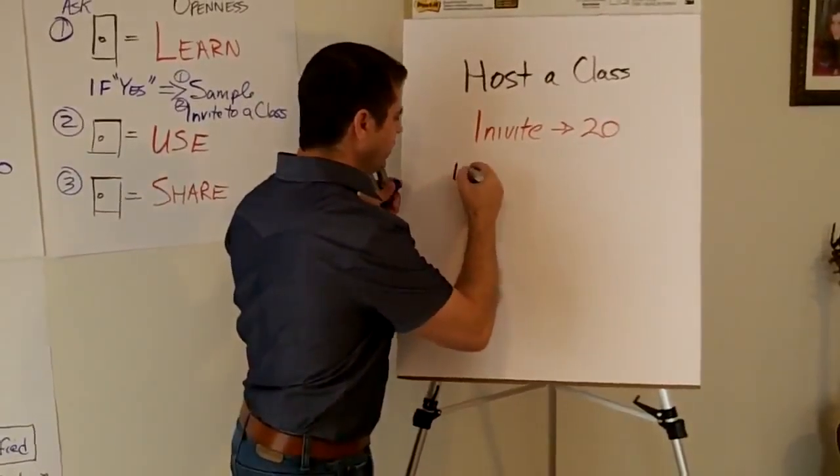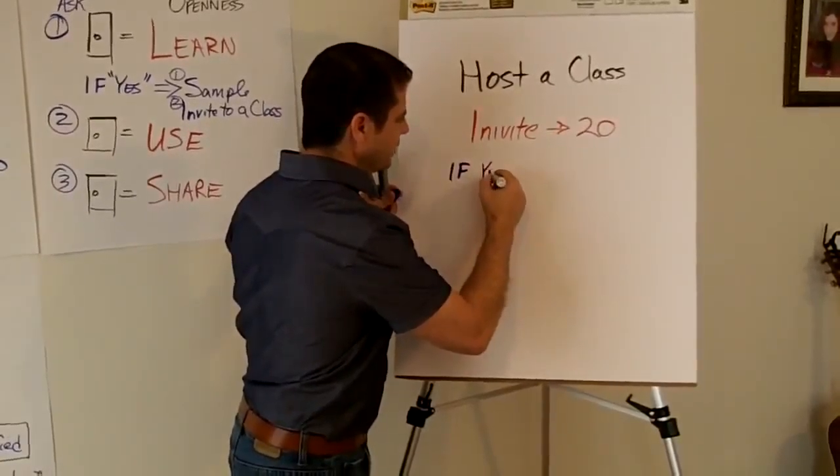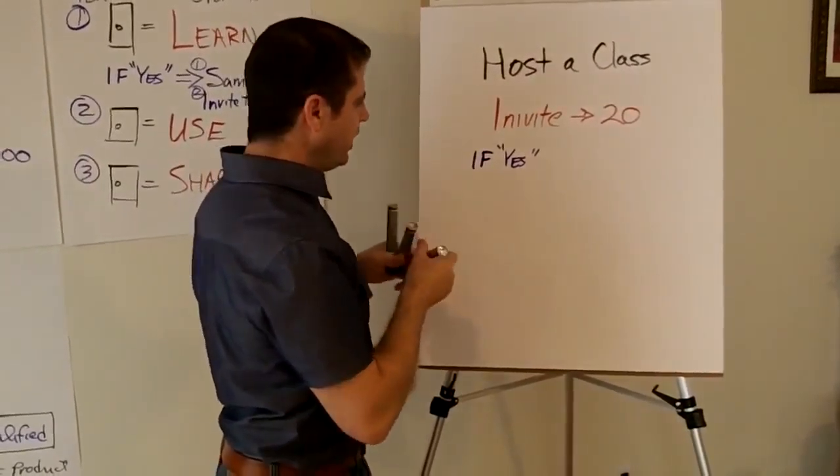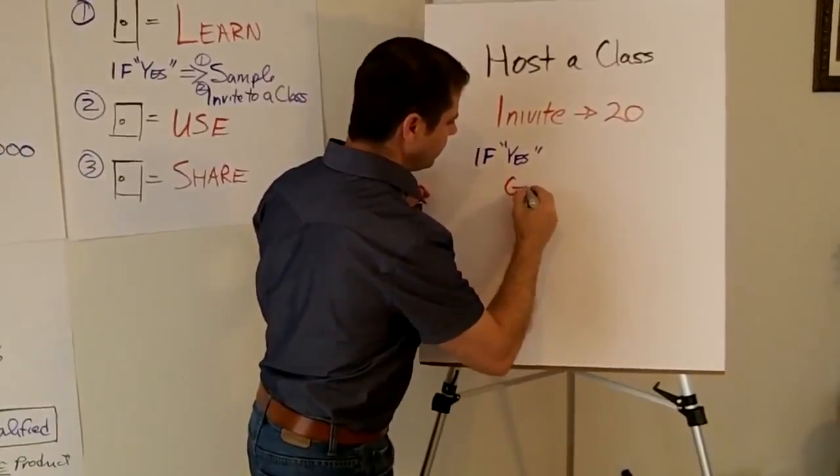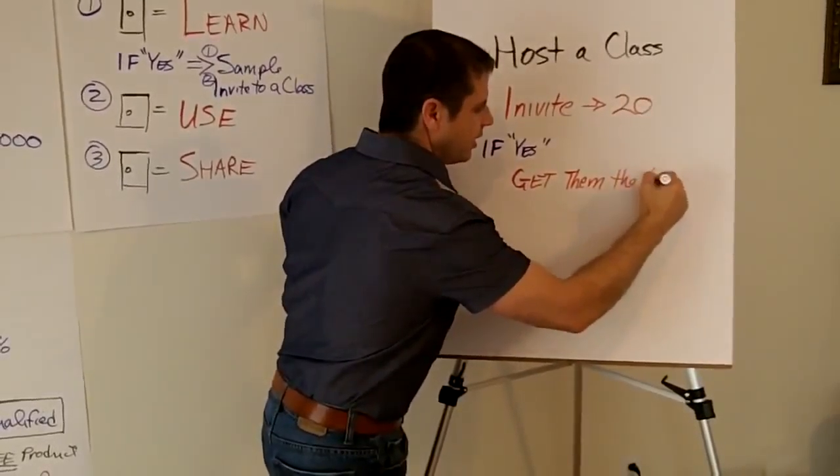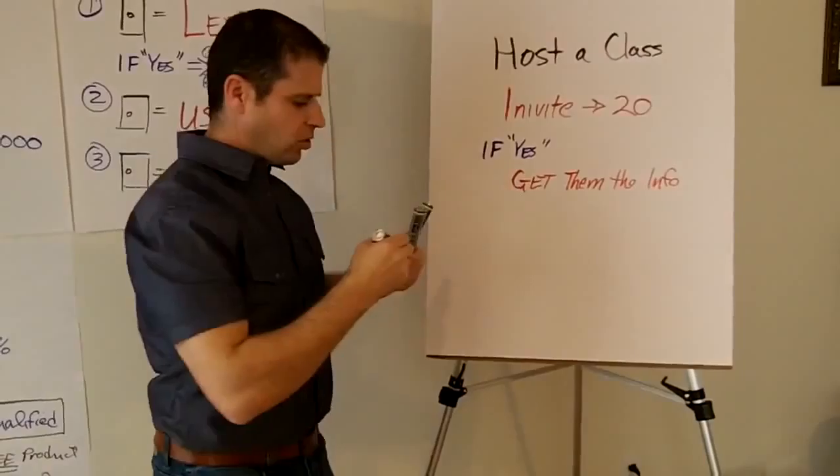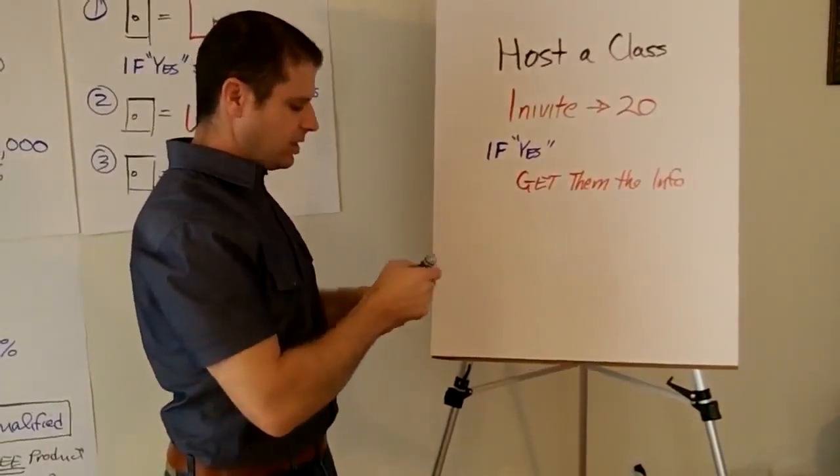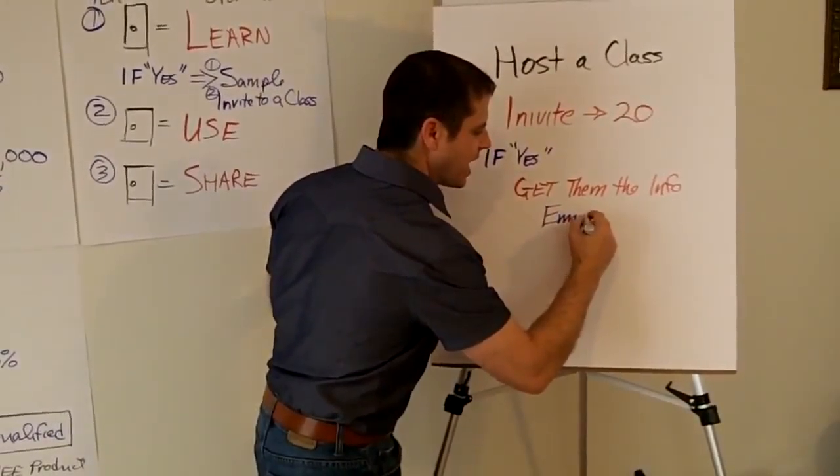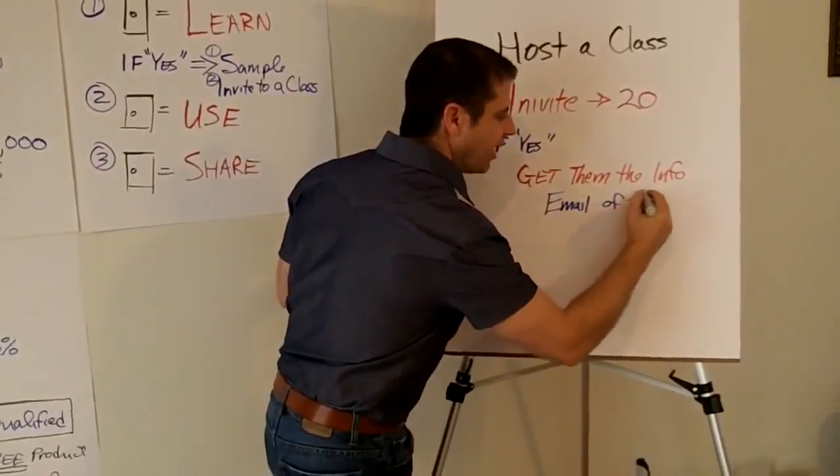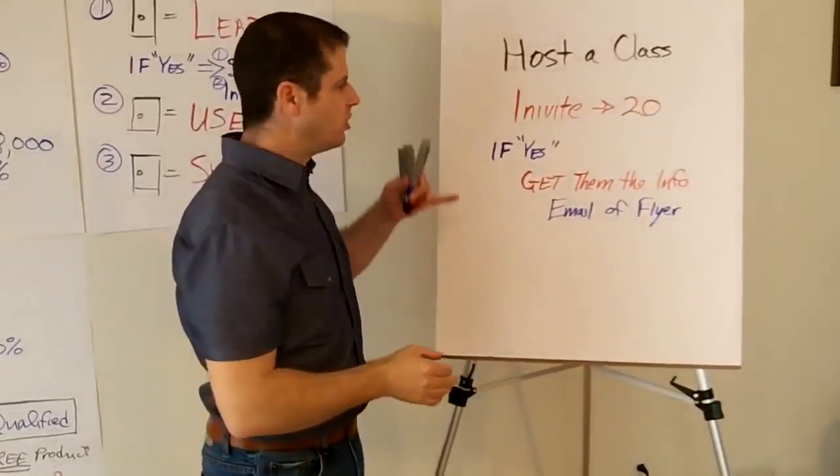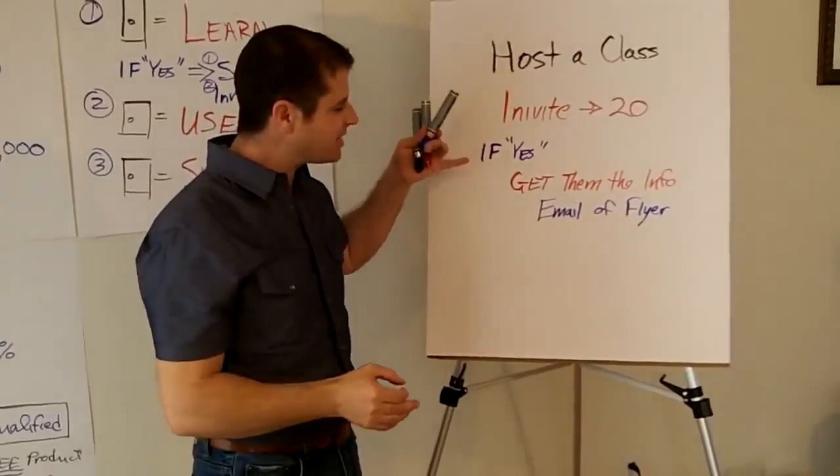Your next step after you invite them is if yes, so let's make the little note here so we follow it. If yes, then what you will do is you get them the information. Get them the info. Now, the way that you do that is you can get them an email with the address and times or a flyer.